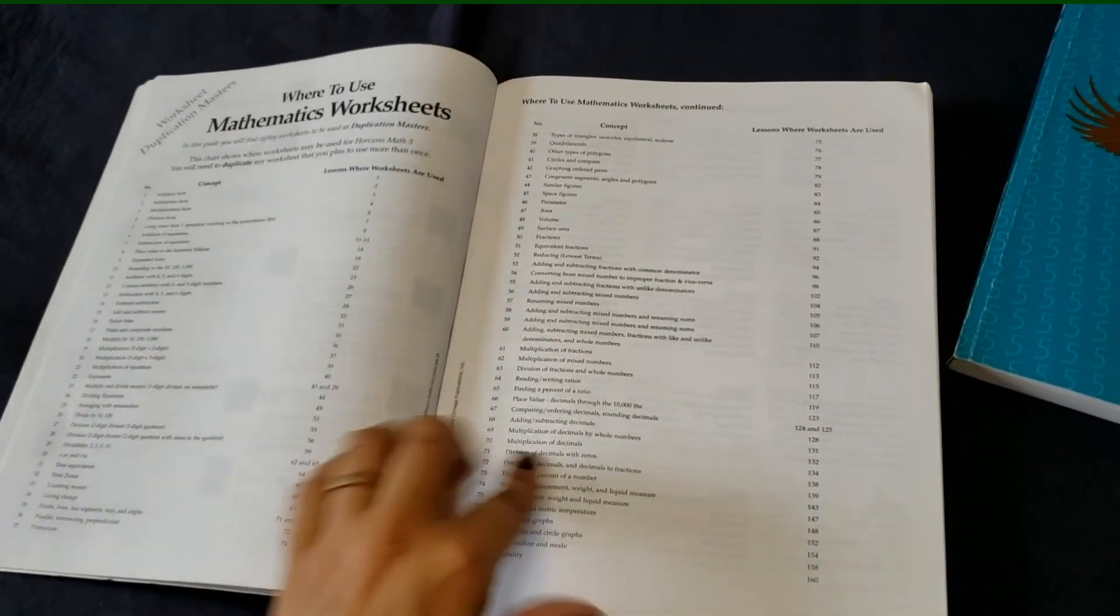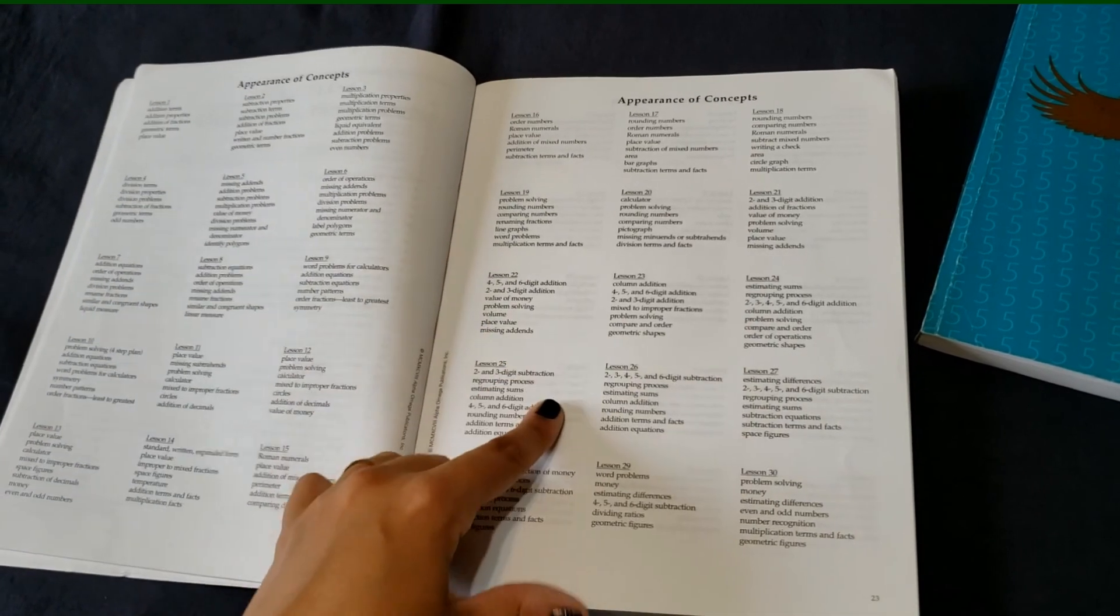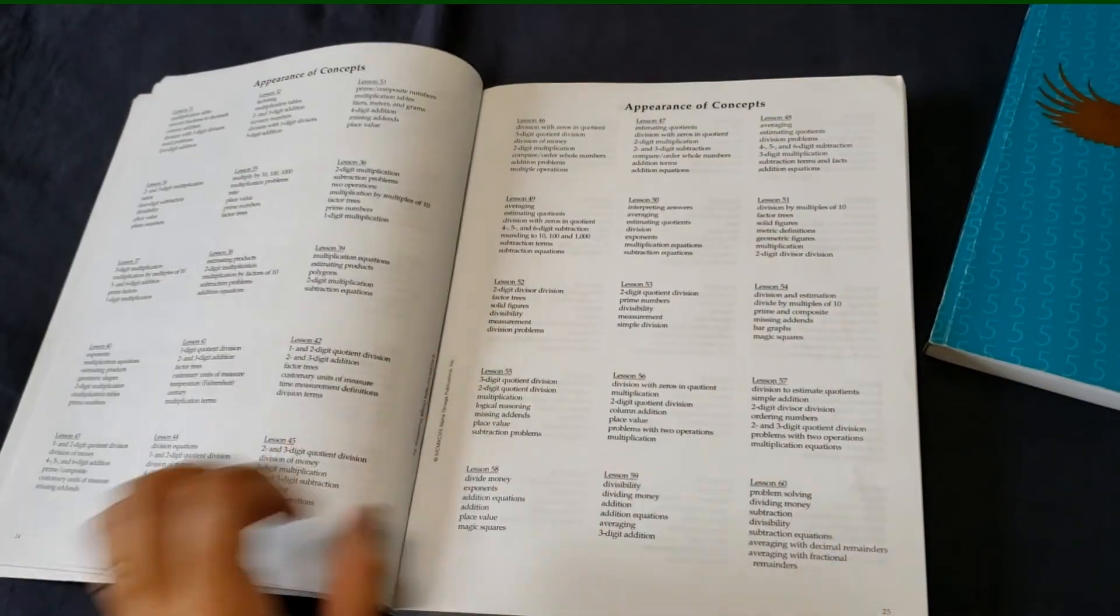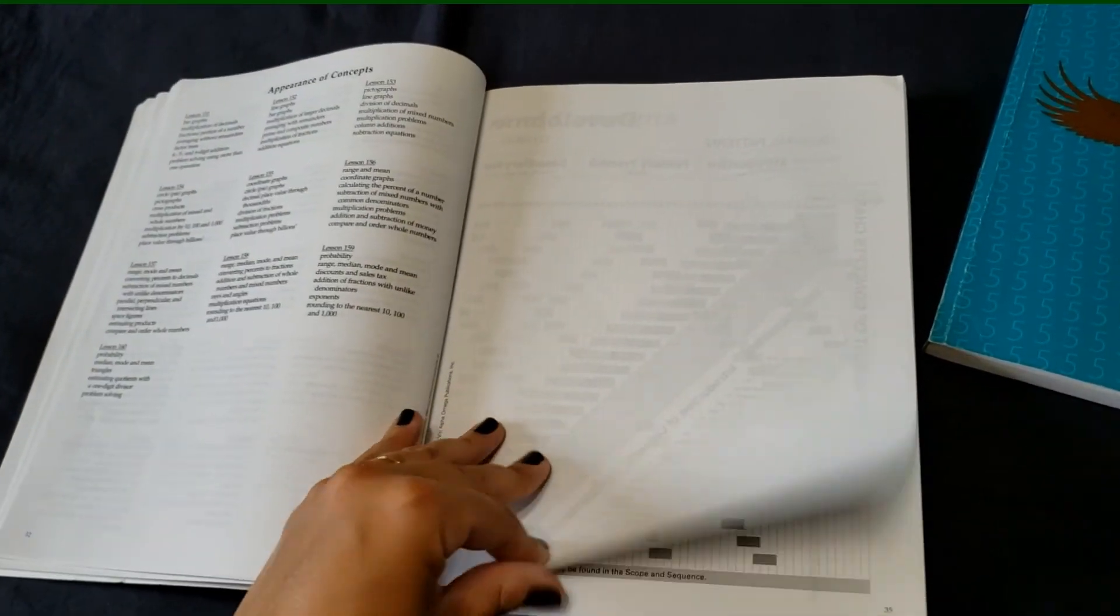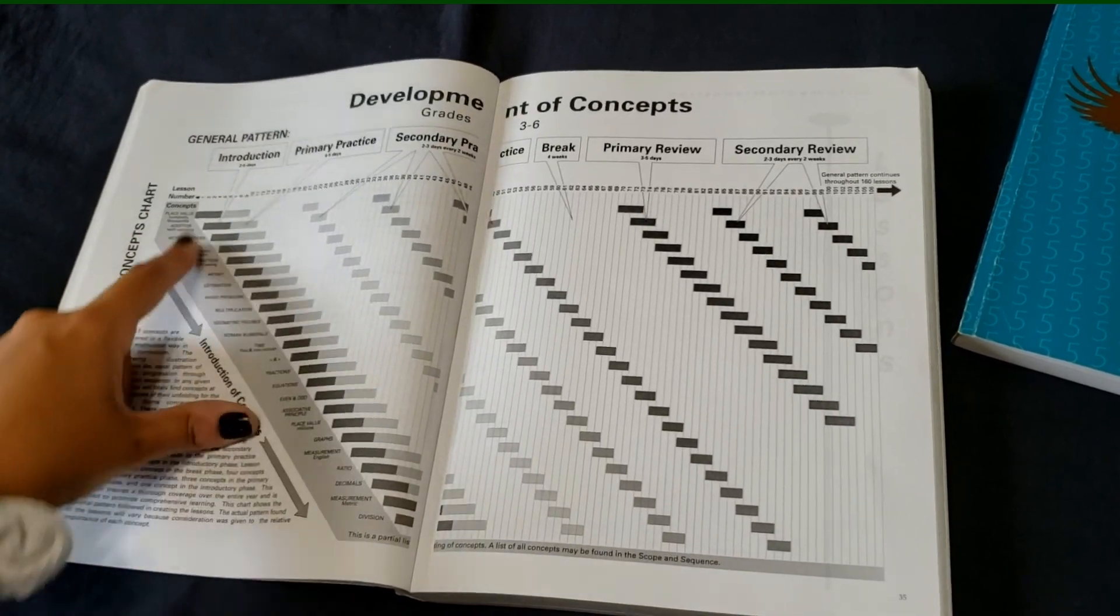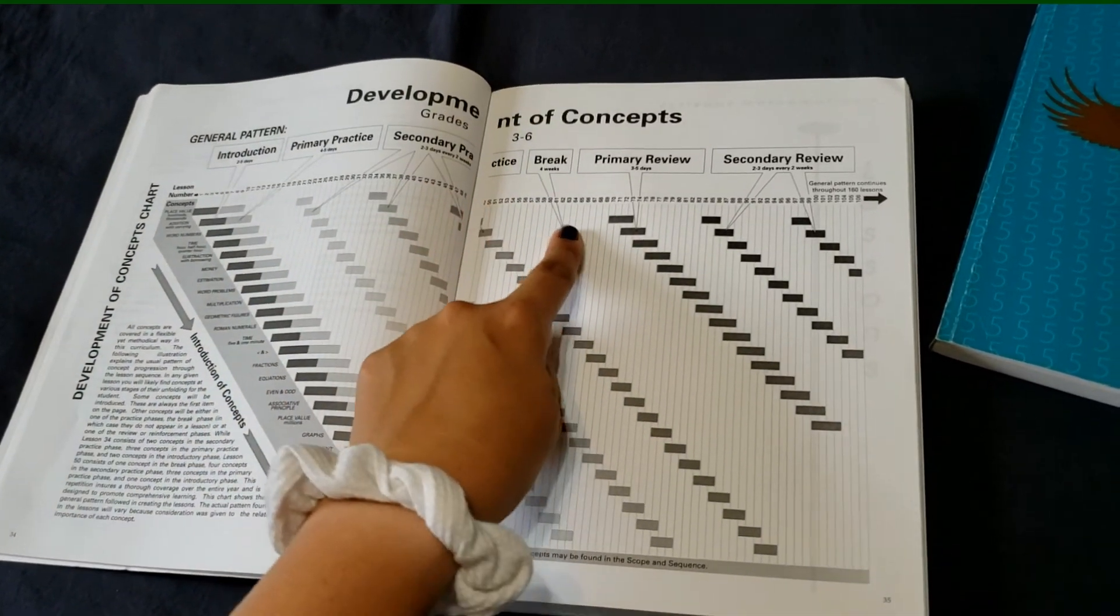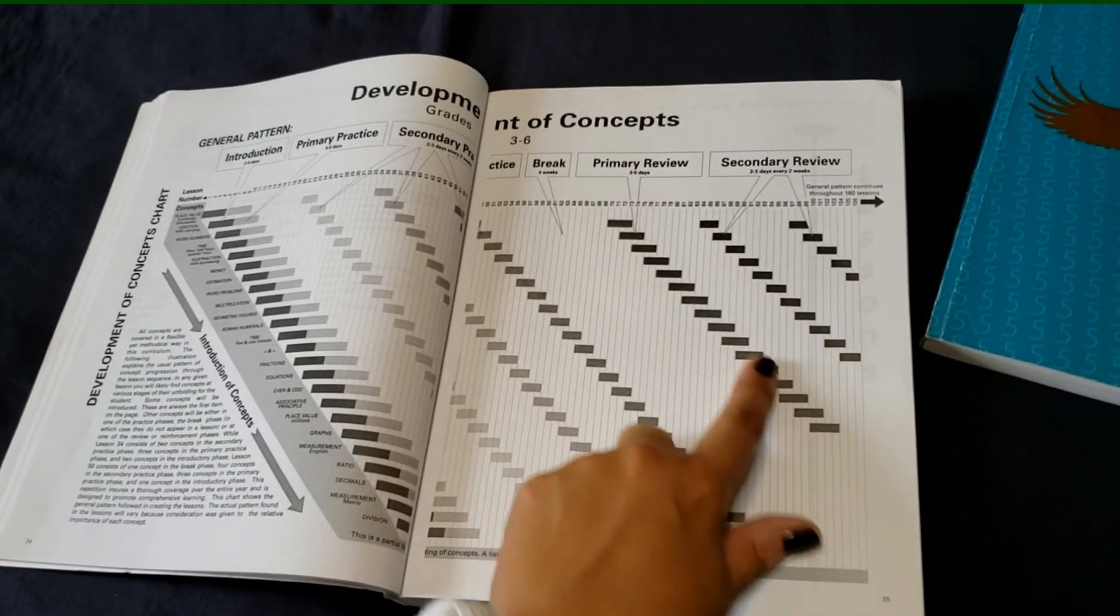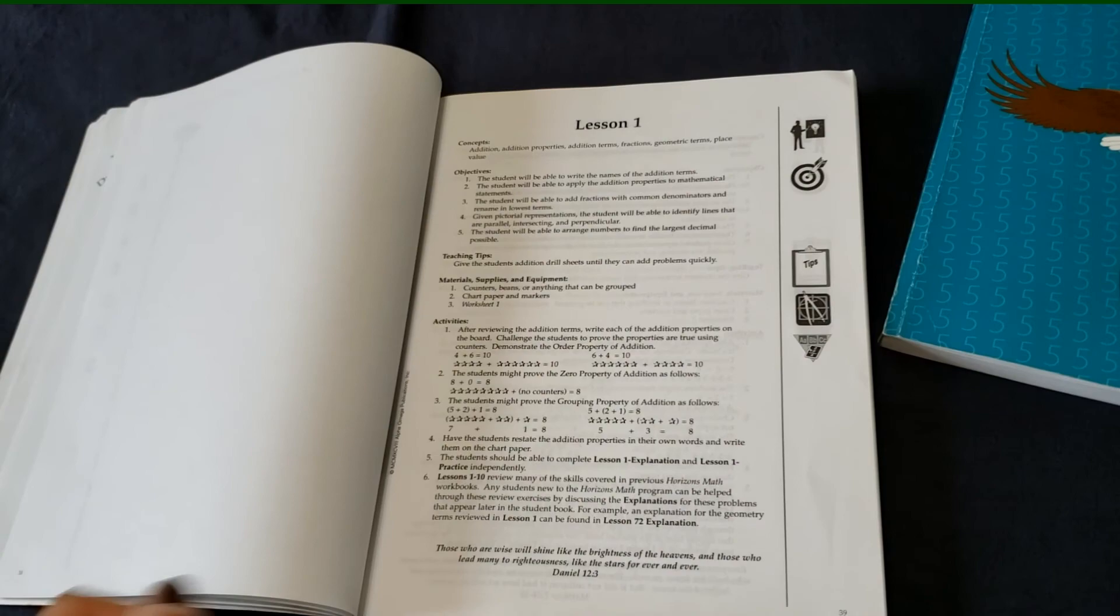And then where to use the mathematic worksheets when concepts show up, what lessons they appear in. And then another visual to show you when the concepts are introduced, practiced, practiced again, there's a break from it, then the initial review and secondary review, and then we get into the lessons.